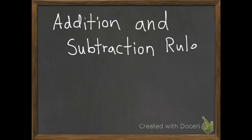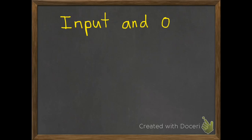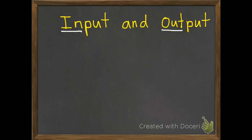Today's lesson is on addition and subtraction rules. All of our patterns today are going to be using addition and subtraction. We're going to be using a couple of new terms. The first one is called an input, and the second one is an output. I will be using just 'in' and 'out' at times to save room, so whenever I say in or out I really mean input or output.